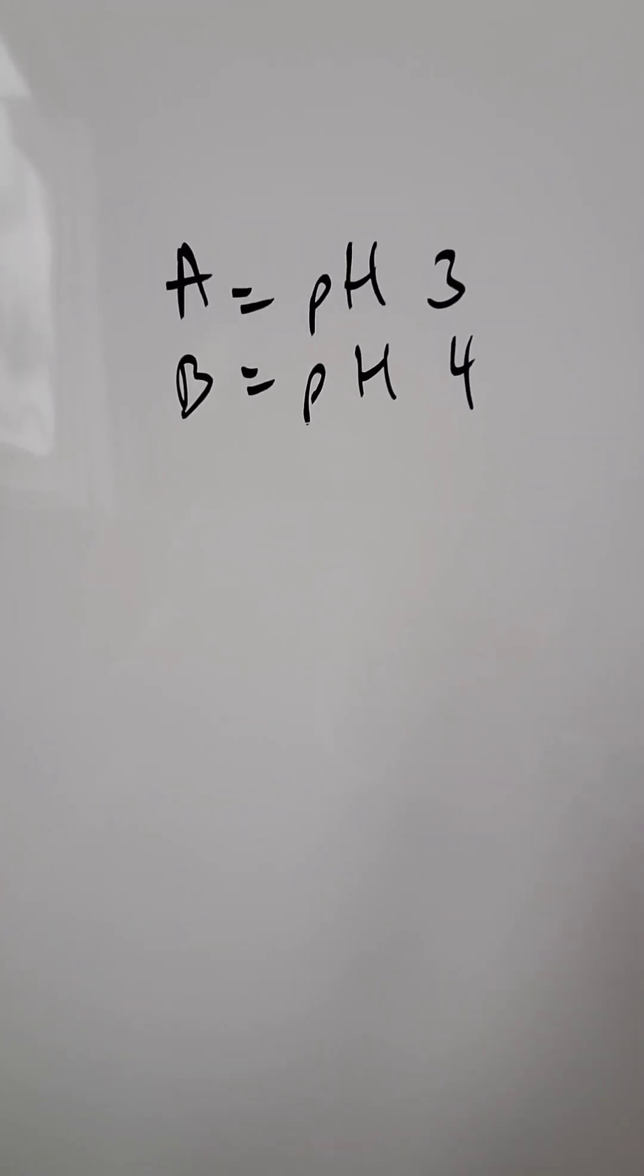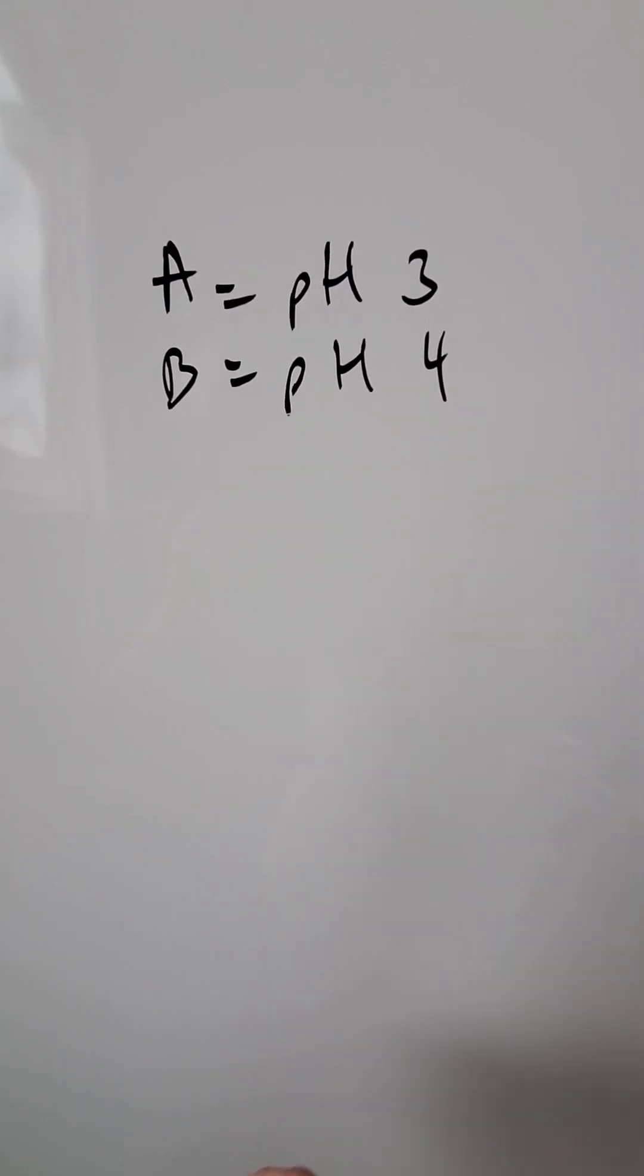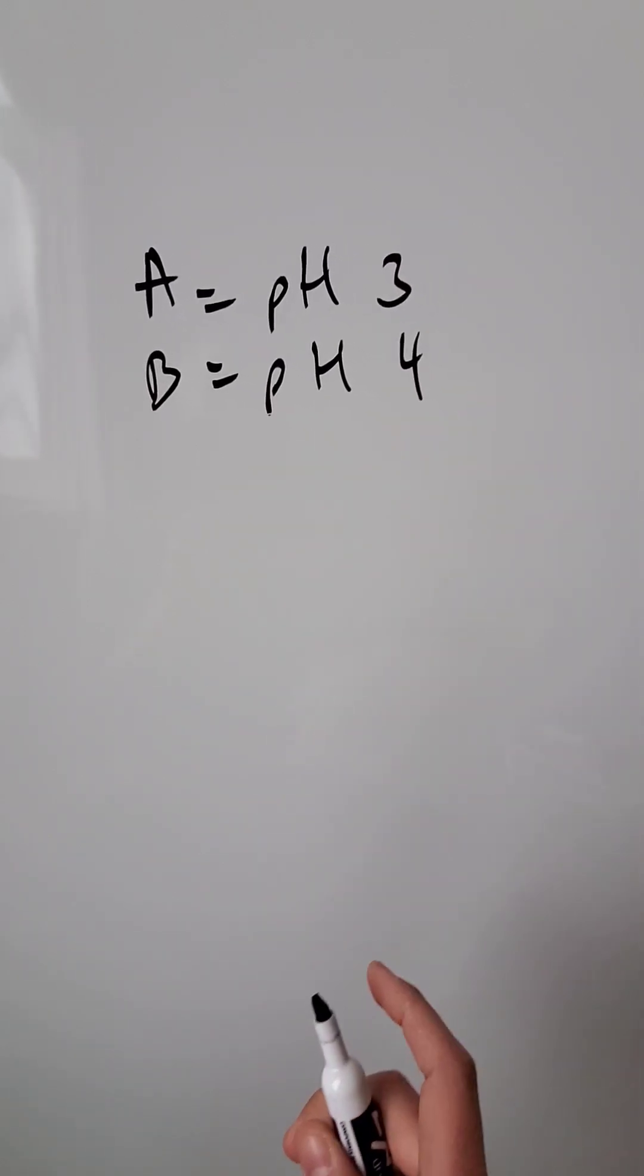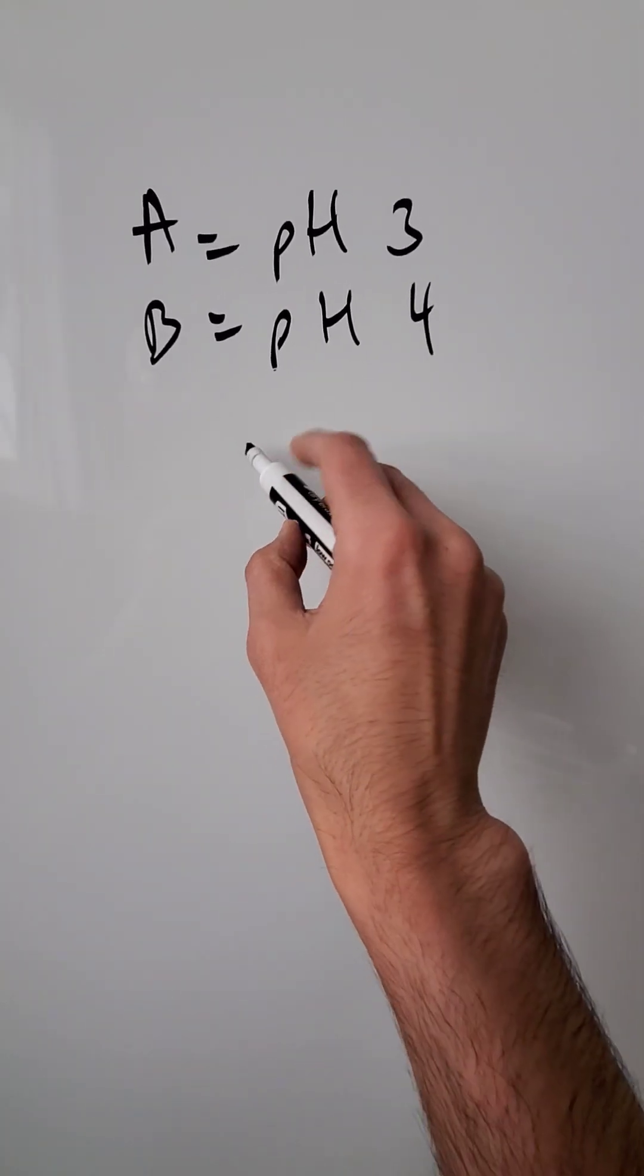We have two hypothetical liquids. Liquid A has a pH of 3, liquid B has a pH of 4. We have to show liquid A is 10 times more concentrated in terms of its hydrogen ions. How can we do it?